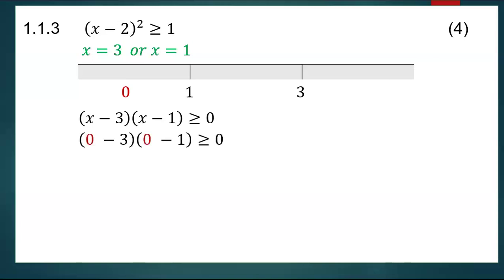In the first bracket I will have minus three. In the second bracket I will have minus one. Negative three multiplied by negative one gives me positive three. I only care about the sign. So I know that x values that are less than one will give me a positive value.